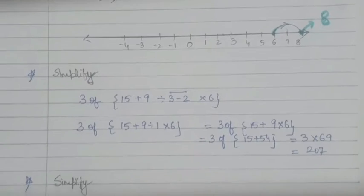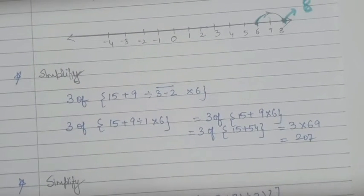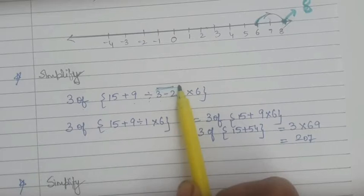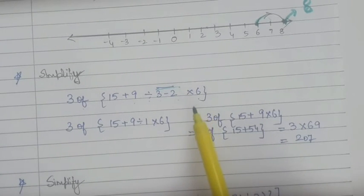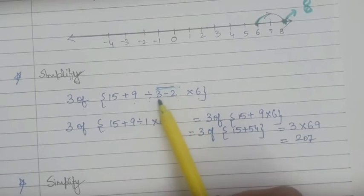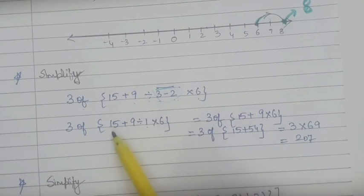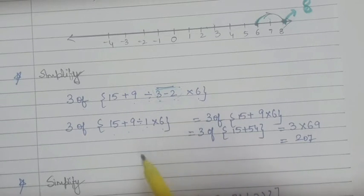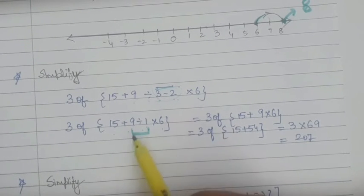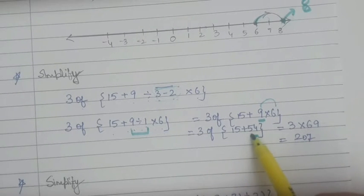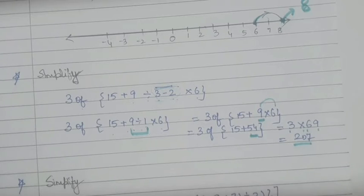The next question is: we have to simplify the given expression, that is 3 of 15 plus 9 divided by 3 minus 2, line bracket into 6. According to the BODMAS rule, first of all we open the line bracket. Now, 3 minus 2 gives us 1. So we get 15 plus 9 divided by 1 into 6. According to BODMAS rule, division should be done first. So 9 divided by 1 is 9; 9 into 6 is 54. So 15 plus 54 is 69. So 3 into 69 gives us 207.